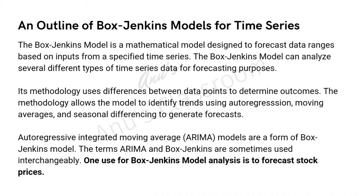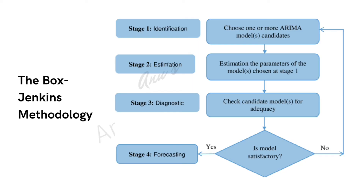So in case your question asks you to describe the auto-regressive integrated moving average or ARIMA, you have to talk about the Box-Jenkins model itself — it is another name, an interchangeable name, for Box-Jenkins. One of the uses of the Box-Jenkins model analysis is to forecast stock prices. The Box-Jenkins methodology has four stages: first, identification — choose one or more ARIMA model candidates; second, estimate the parameters for the chosen model; third, diagnose — check the candidate models for adequacy; and if the model is satisfactory, go for forecasting; if not, choose a different ARIMA model candidate.